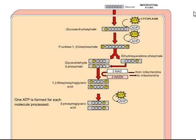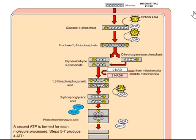So remember — earlier you had consumed energy, but now in this process you are beginning to generate energy. Because there are two molecules, we generate two ATP — one per each molecule. The process will continue, and eventually two pyruvic acid molecules will be produced. So you consume two ATP at the beginning and generate a total of four ATP.